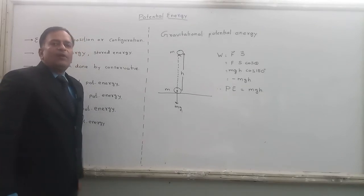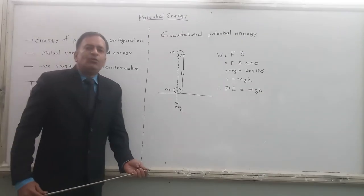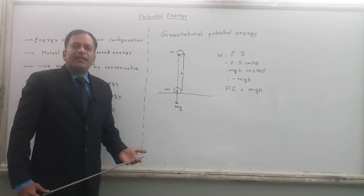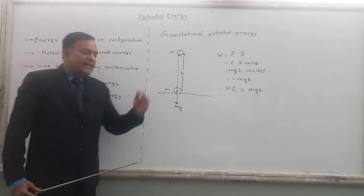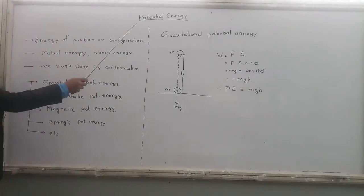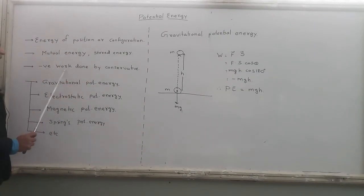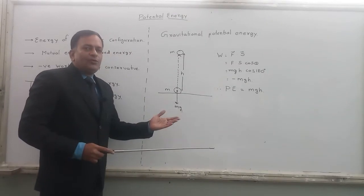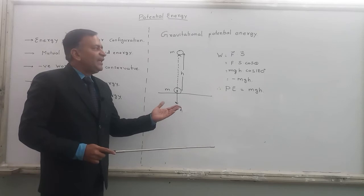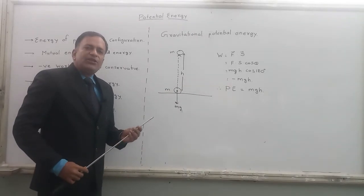We do not have any shortcut formula to calculate energy. So what we do? We actually calculate the work done, and that work done is equal to energy of the body. Here, see, what is potential energy? It is equal to the negative work done. So first we will find out the work done and make it negative. Whatever work done comes, we will take negative, and that will be potential energy.